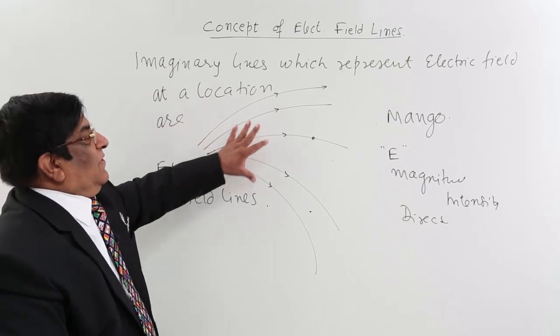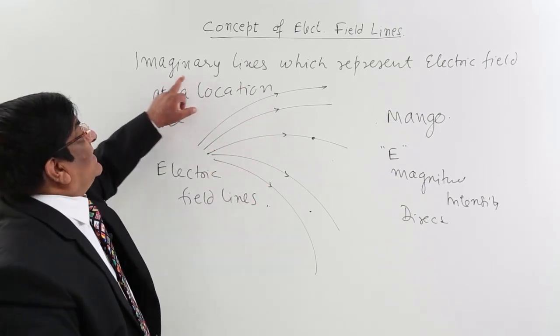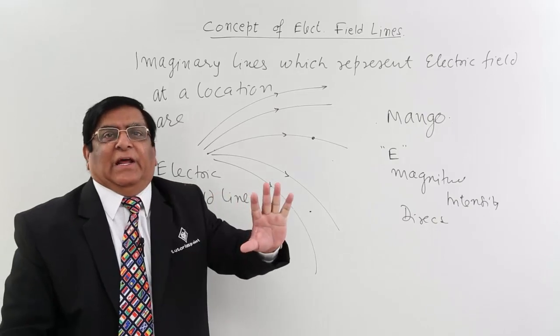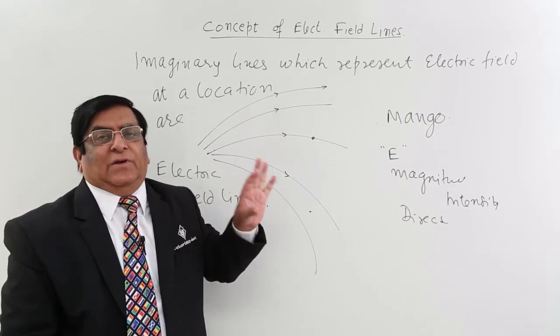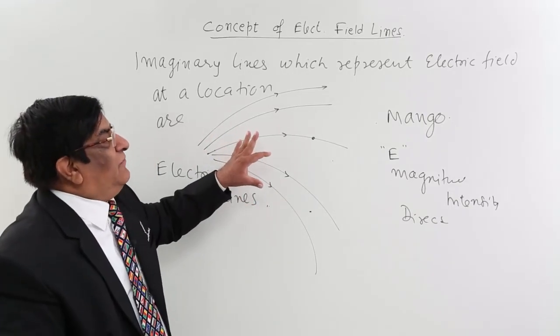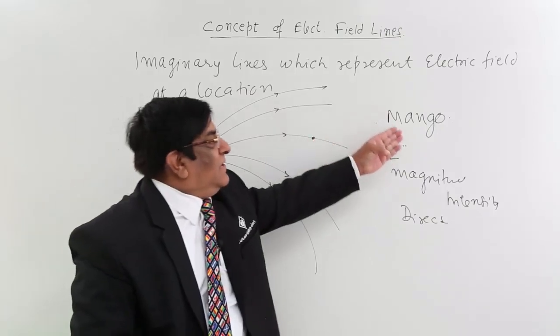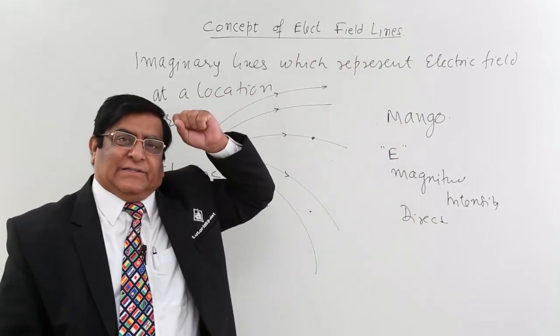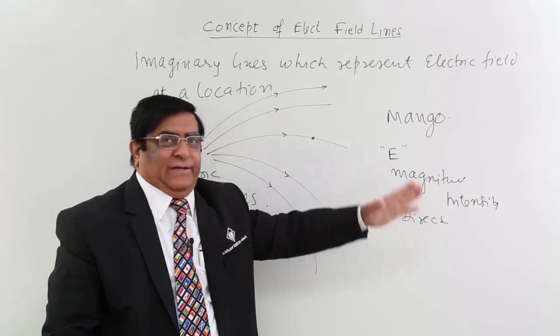So this is concept of electric field lines and understand, these are imaginary, there are no real lines as such. Only by seeing this drawing, we can make out the things like we are making out by writing many other things. It should give us two things very clearly.